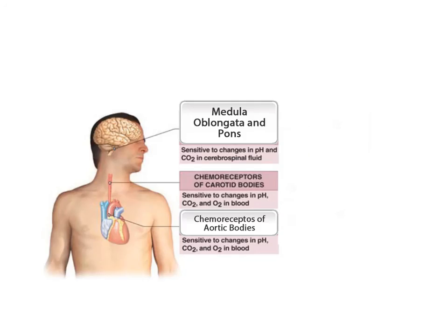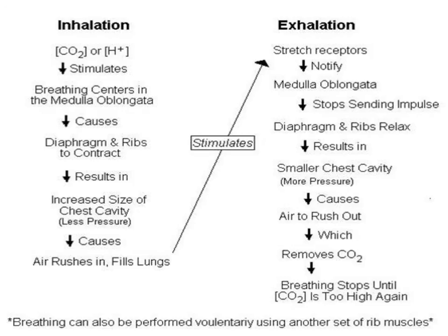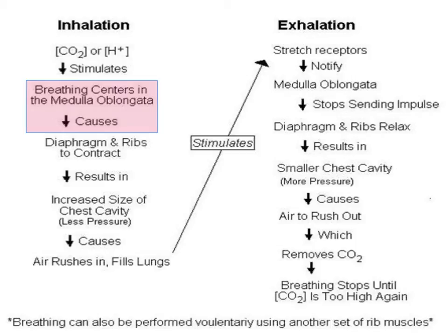As the cells in our body metabolize nutrients to produce energy, carbon dioxide and hydrogen ion levels in the body increase in the arterial blood. Chemoreceptors within the main arteries monitor the levels of carbon dioxide and hydrogen ions. When carbon dioxide and hydrogen ion levels in the blood get too high, they stimulate the breathing center in the brain called the medulla oblongata, which then initiates inhalation.